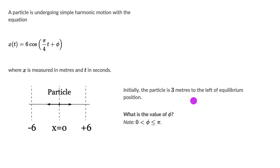We know the position of the particle at time t equals zero. At t = 0, we know that x equals minus 3 meters because it is to the left of the equilibrium, which is towards the negative side. So let's put these values into the equation.